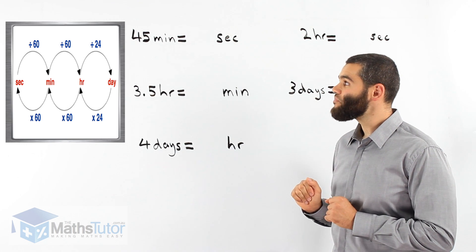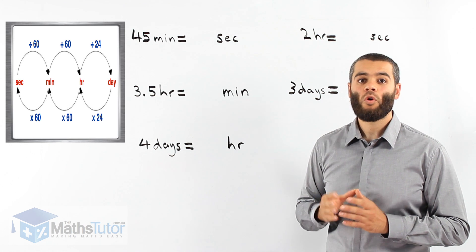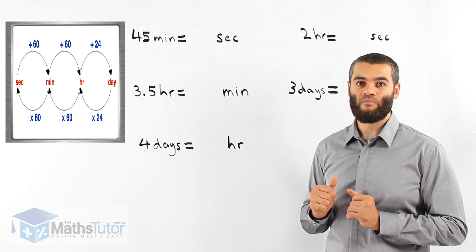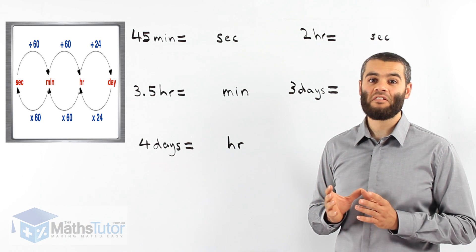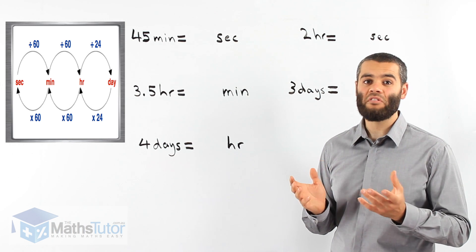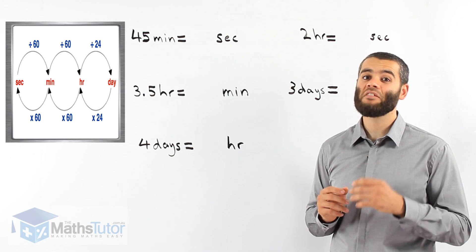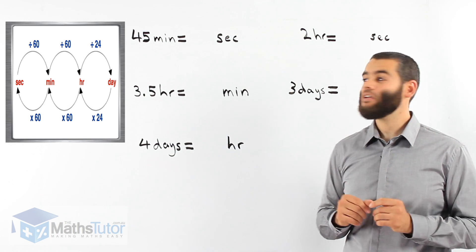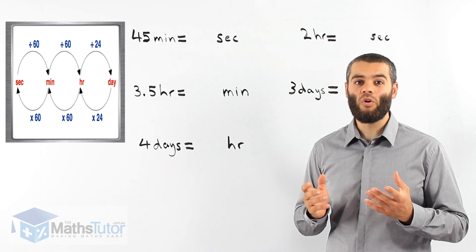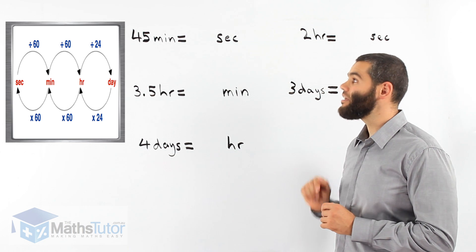We'll notice that we have seconds going to minutes. How do we go from seconds to minutes? We divide by 60. Why 60? Because there are 60 seconds in a minute. And if we want to go from minutes to hours, we divide by 60 again — because there are 60 minutes in an hour. And if we're going from hours to days, we divide by 24, because there are 24 hours in a day.